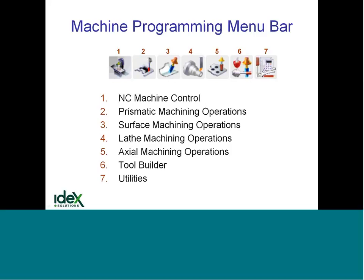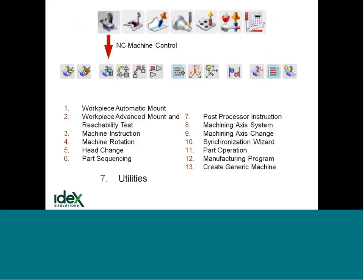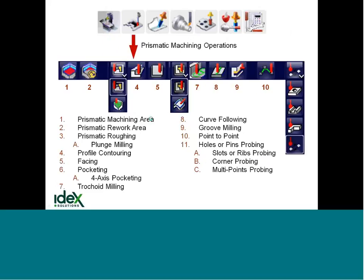All of the tooling functions are accessible through the tool builder icon, and then there's a utilities icon that gives access to other functions. When you put the cursor over one of these icons, the icons for the rest of the functionalities in that particular category show up. Here you can see all the various functions that are under the NC machine control category.